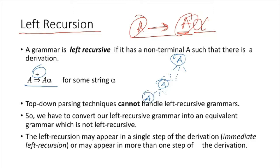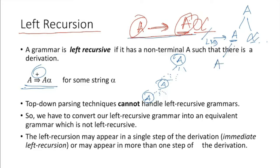If this is the situation, then we write the left recursion like this. In this case, if we start with A, immediately we get A at the leftmost non-terminal position. As we are doing leftmost derivation, the leftmost symbol is A. If we apply this rule again, it will give A and alpha — and this thing will be continuously, recursively happening. That is the reason we call it left recursion.